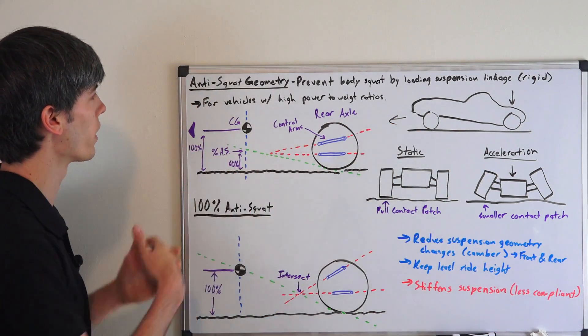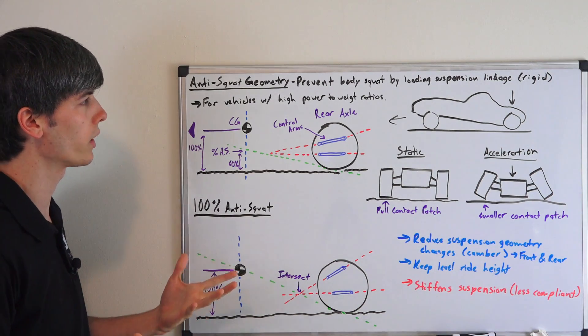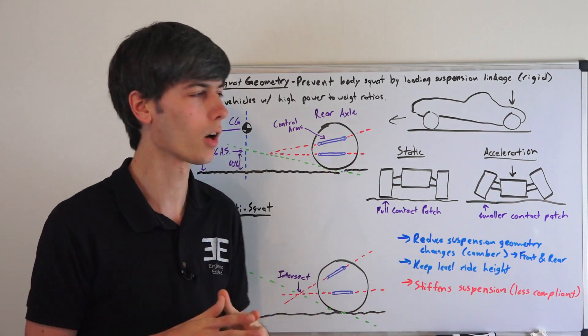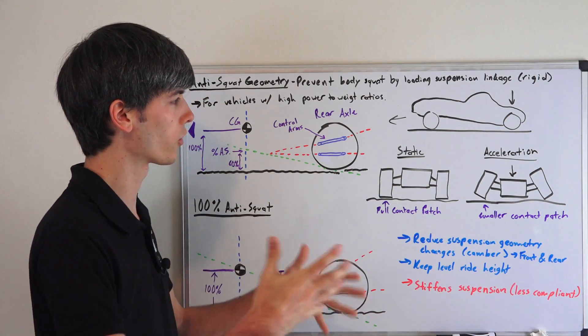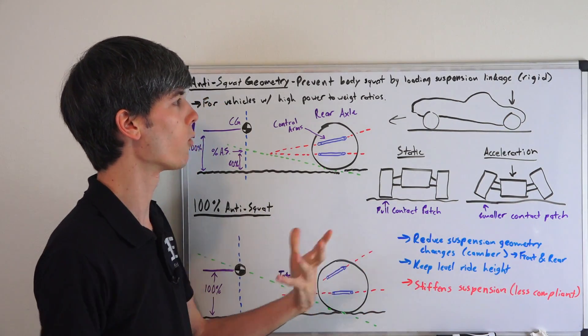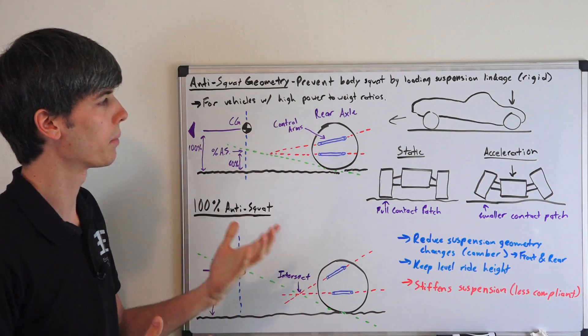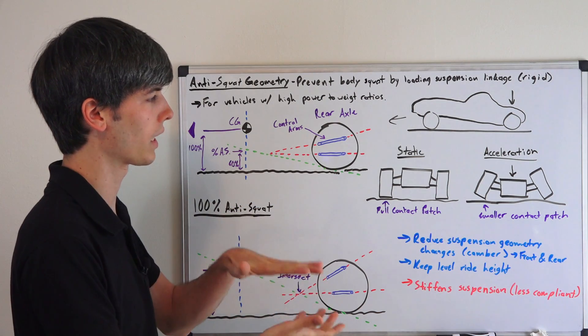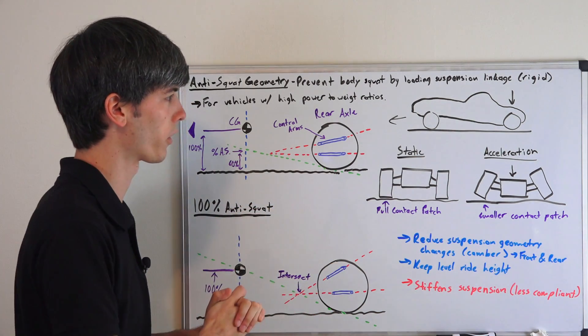You could go with a lot of anti-squat geometry and get better drag times. Whereas for a track car where you have turns and things like that, and also rougher conditions, then you may want to not use quite as much, because it'll have a big negative impact on your suspension being able to maintain contact with the road.